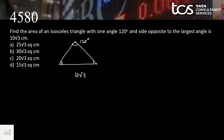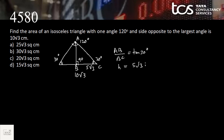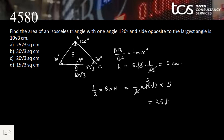Since the triangle is isosceles with the 120° angle at top, the other two angles are each 30°. Dropping a perpendicular from the 120° vertex onto the base (10√3) bisects it into 5√3 each. In the right triangle formed, tan(30°) = height / (5√3), so height = 5√3 × (1/√3) = 5 cm. Area = ½ × base × height = ½ × 10√3 × 5 = 25√3 square centimeters. Option A.